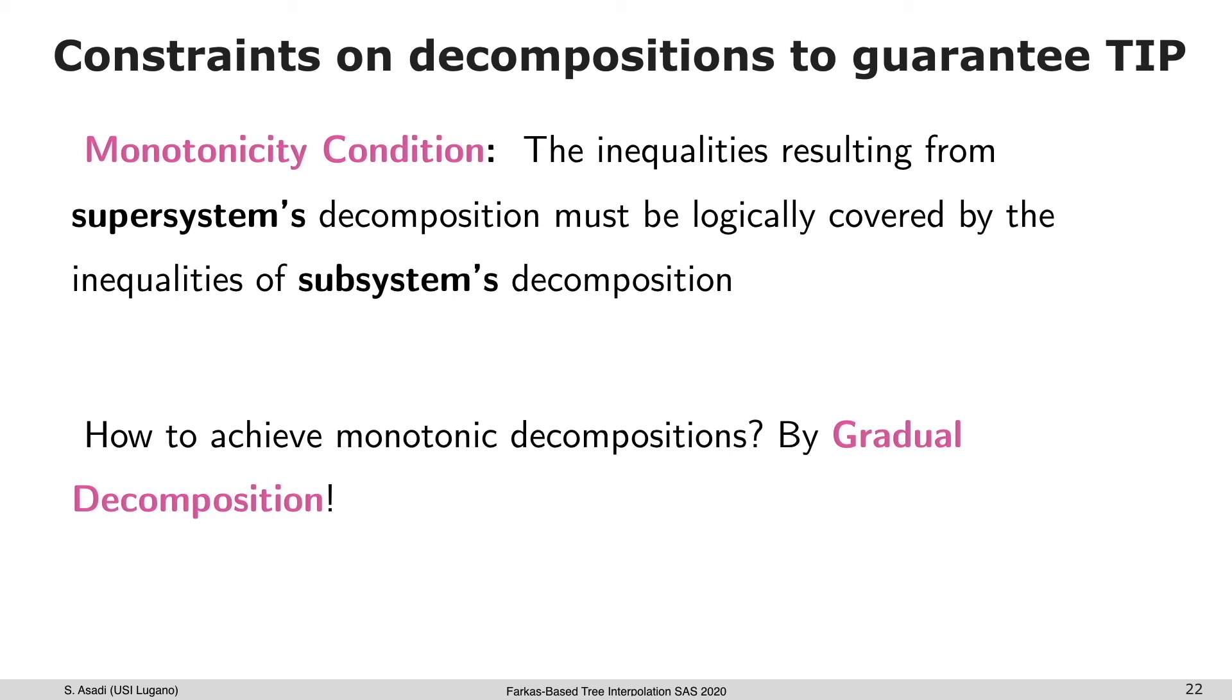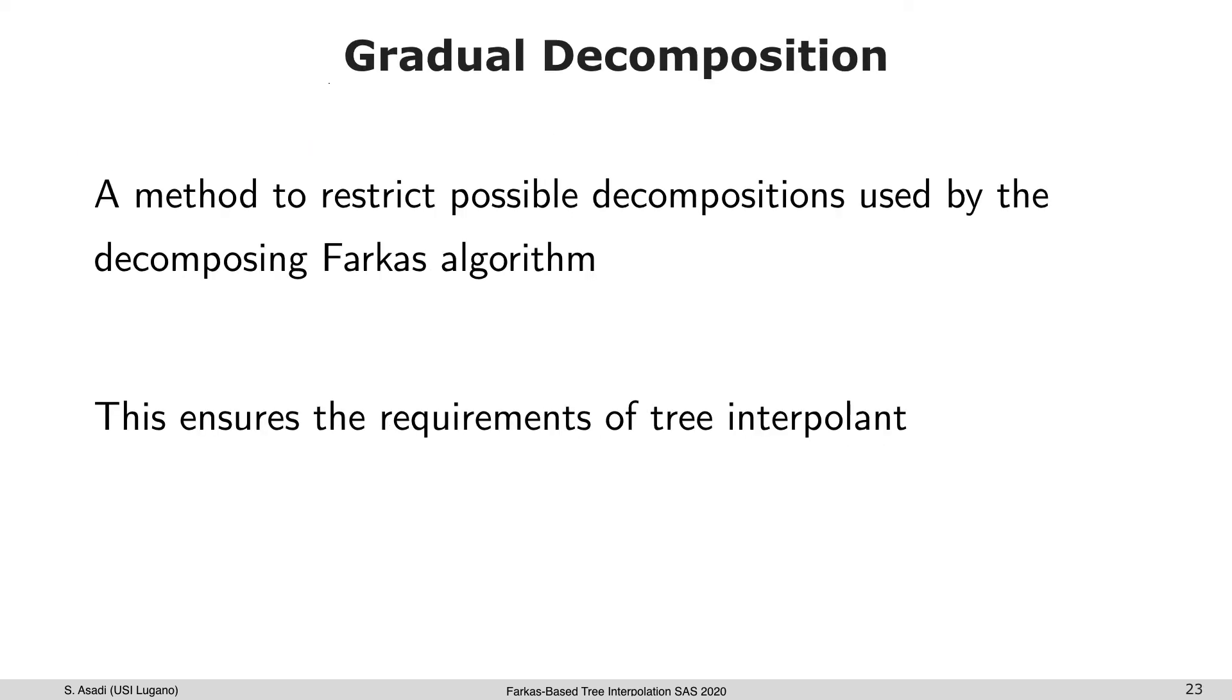The gradual decomposition is a method to restrict the possible decomposition used by the decomposing Farkas algorithm. The idea is to first decompose the larger subsystem, and then instead of computing independent decomposition for its subsystem, we decompose only the elements of the decomposition of the larger system. Therefore, we could ensure the requirement of tree interpolant.